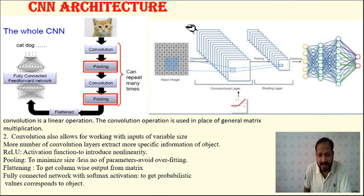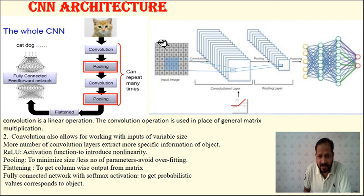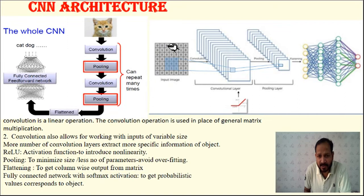This is the architecture of CNN. Before discussing the architecture, note that CNNs are used for image processing and object detection. An image is represented as a matrix with X and Y coordinates along with pixels. The number of pixels depends on the number of rows and columns. There is a large matrix of pixels in any image.